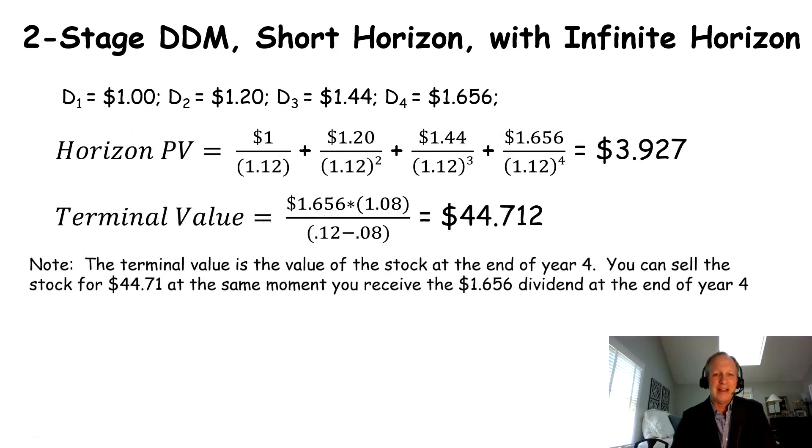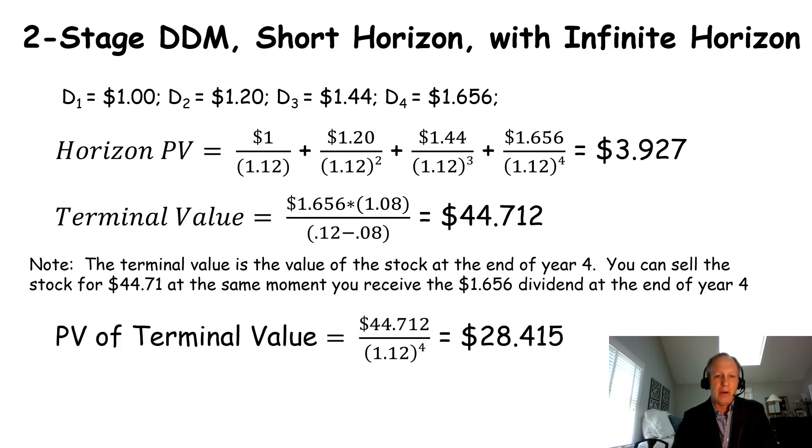And that is, again, going to be this number here, $44.712, divided by 1.12 to the fourth power. So the very moment I get this $1.656, my stock's going to be worth, at that time, $44.712. So these occur at the same moment. That's why I'm using this 1.12 to the fourth power. I'm not doing 1.12 to the fifth power. These two line up. That's the key. This is $28.415.